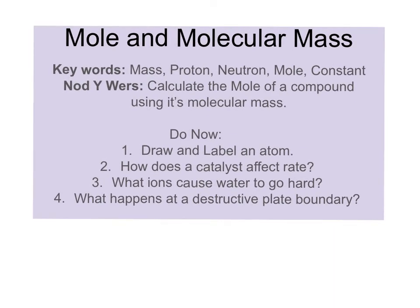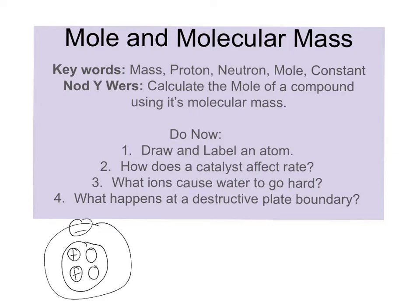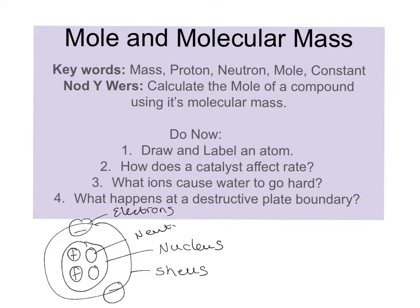First question: draw and label an atom. We've got to get really good at this. So you've got your nucleus in the middle of your atom, then you've got your shells that rotate around the atom. Your electrons are the negative ones, your neutrons are neutral, and then your protons are positive.